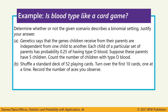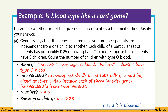Let's use those four criteria to identify whether a given scenario is a binomial setting. Part A: genetics says children receive genes from parents independently from one child to another. Each child of a particular set of parents has a 0.25 probability of having type O blood. These parents have five children — we count the number with type O blood. Checking BINS: binary — yes, success is type O, failure is any other blood type. Independent — knowing one child's blood type tells us nothing about the others. N — five children, five trials. Same probability — 0.25 for each child. All four criteria met: this is a binomial setting.